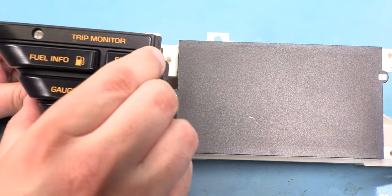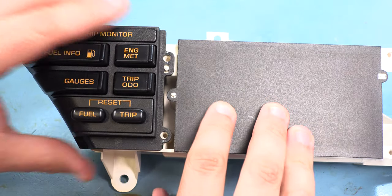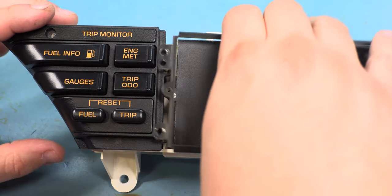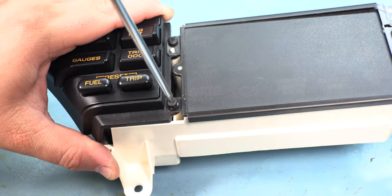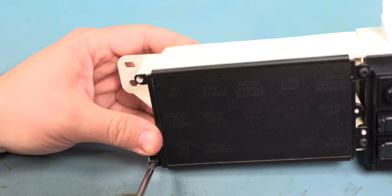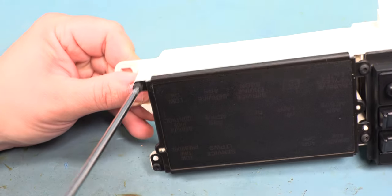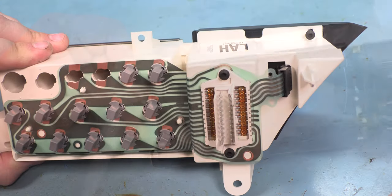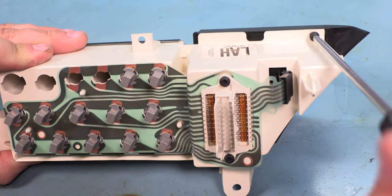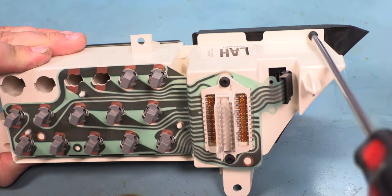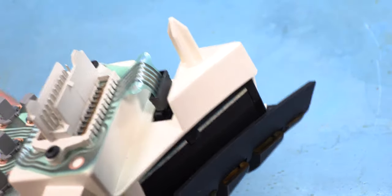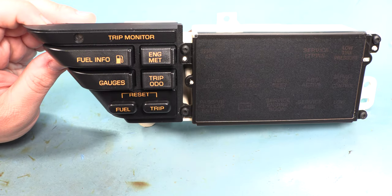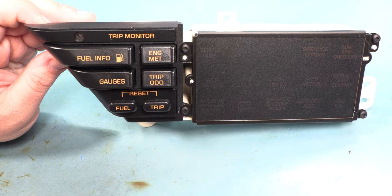Next, we'll reinstall the switch panel. We'll rest that in place. And we'll reinstall the frame around the telltale bulbs. We'll reinstall the Torx screw on the back side of the panel. And we'll reconnect the plastic circuit board connector to the switch panel. And that completes the repairs to our 1990 through 1996 trip monitor slash digital information center.